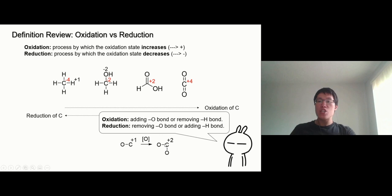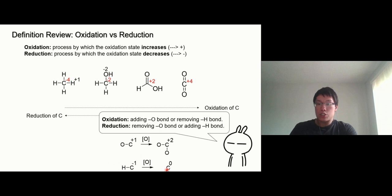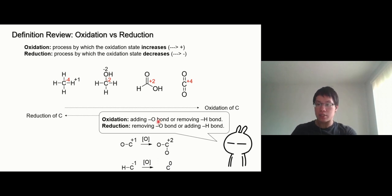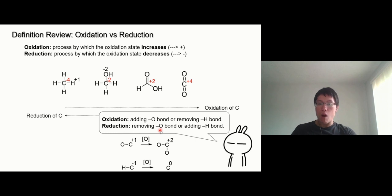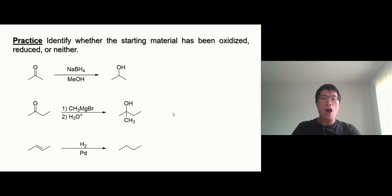Basically, the oxidation number increases when you add oxygen or remove hydrogen. For example, one oxygen makes carbon plus one — it loses one electron. Two oxygens make carbon plus two. Removing hydrogen also has the same effect: remove one hydrogen and carbon goes from minus one to zero, a lower oxidation number — that's a reduction reaction. So for oxidation you either add oxygen or remove hydrogen; for reduction it's the other way around — remove oxygen or add hydrogen.